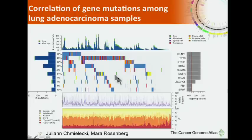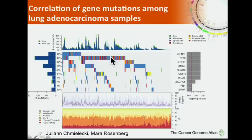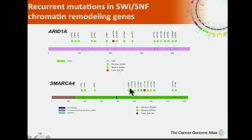Looking at correlation of gene mutations, EGFR mutations — frequently insertion-deletion mutations — occur predominantly in samples with low overall mutation rates. TP53 is the most frequently mutated gene in lung adenocarcinoma, as it is in squamous cell and small cell lung carcinoma. There is mutual exclusion between mutations in KRAS, EGFR, and BRAF. We also see recurrent loss-of-function mutations in SWI-SNF complex chromatin remodeling genes, most notably ARID1A and SMARCA4.